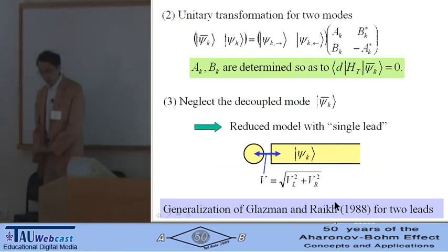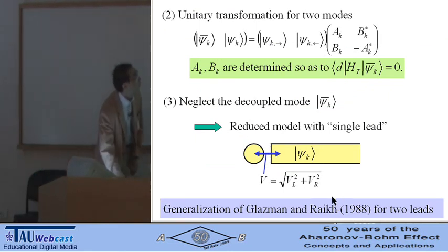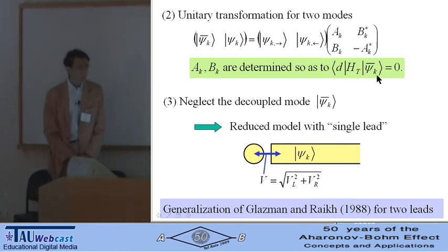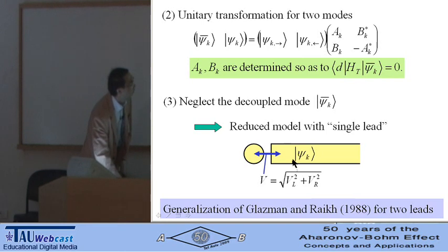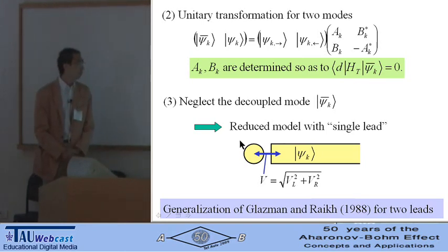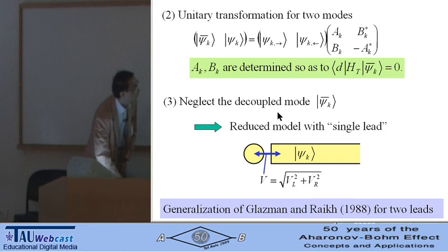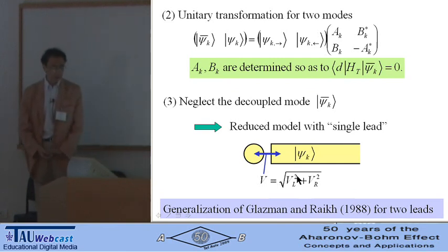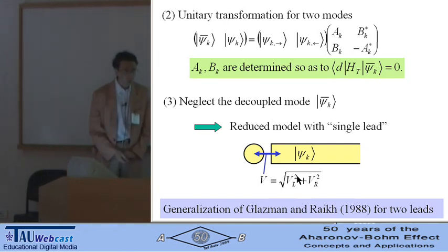Second, we perform unitary transformation for the two modes so that one of the modes is completely decoupled from the quantum dot. Neglecting the decoupled mode, we make the reduced model with single mode. This mode is coupled to the quantum dot with this tunnel coupling. This is the generalization of the paper by Glazman and Raikh for two separate leads.